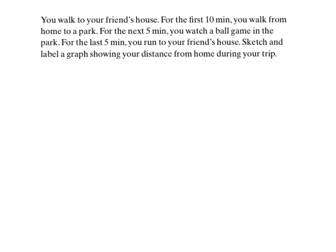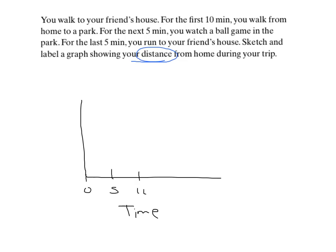Other types of graphs are given where we are going to measure the distance from home during the trip — so distance with respect to time. Once again, I'm going to put the time along the x-axis, and it seems like it's in 5-minute increments: 0, 5, 10, 15, 20, 25, 30 minutes. And I'm going to be comparing that to distance on the y-axis.